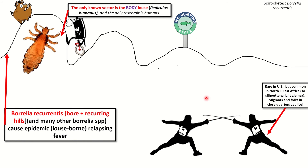This is, in fact, the spirochete, which also can be represented by the squiggly line of the hills here. The people who get this are people who get body lice. Now remember, these are called body lice, but they really actually like to live on the scalp and the hair — that's where you'll typically find the body louse.